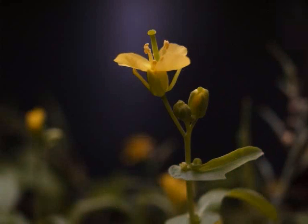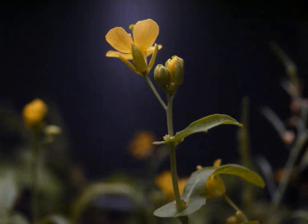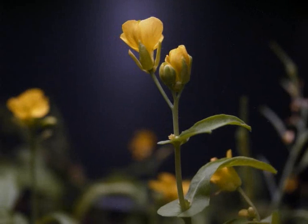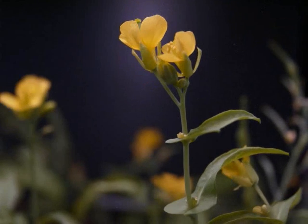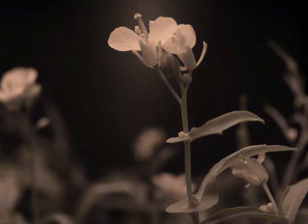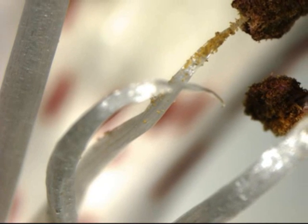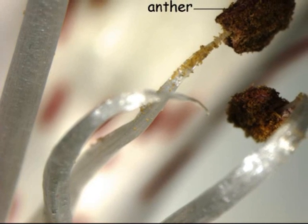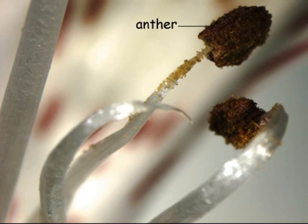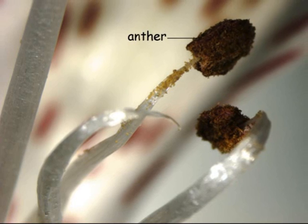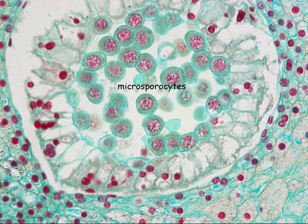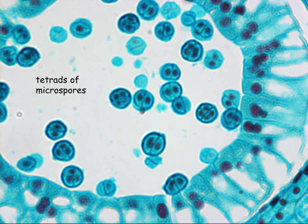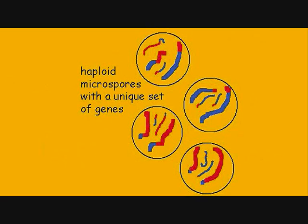Specialized cells in the haploid gametophyte will become the sperm or the egg cells. At the tip of each stamen, there is a specialized structure known as the anther. Inside each anther, there are specialized diploid cells called microsporocytes, which will undergo meiosis to form tetrads of microspores. Each microspore has a unique combination of genes on a haploid set of chromosomes.